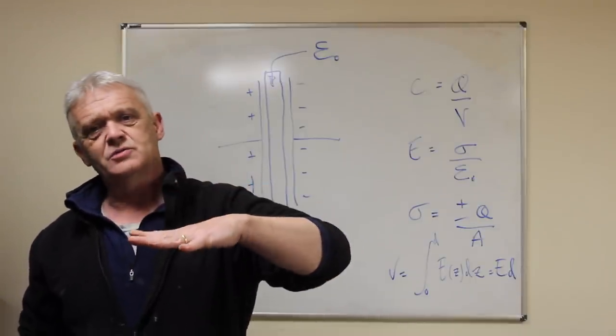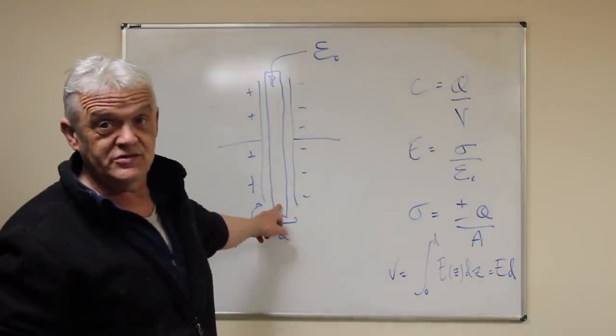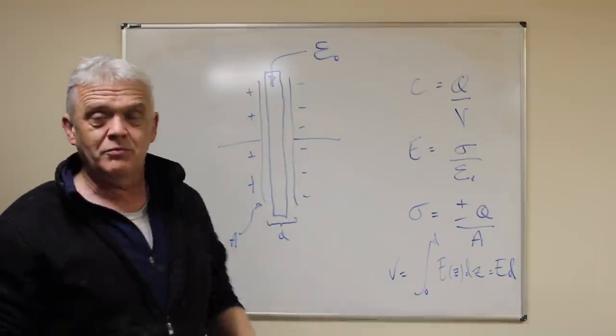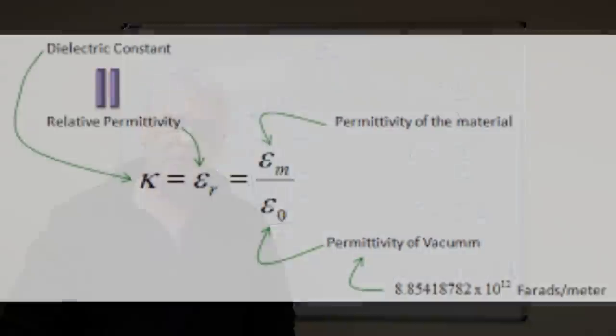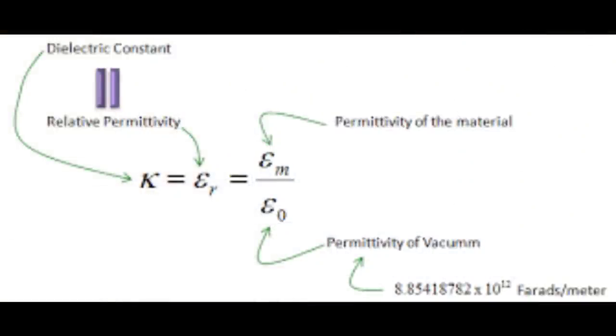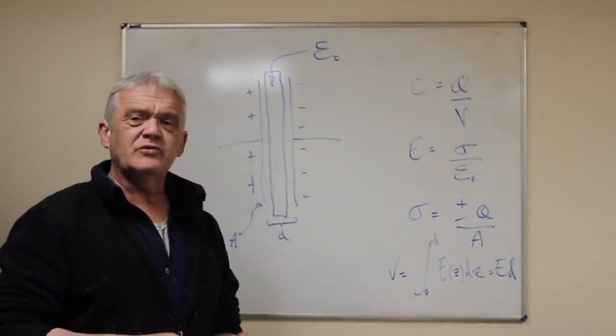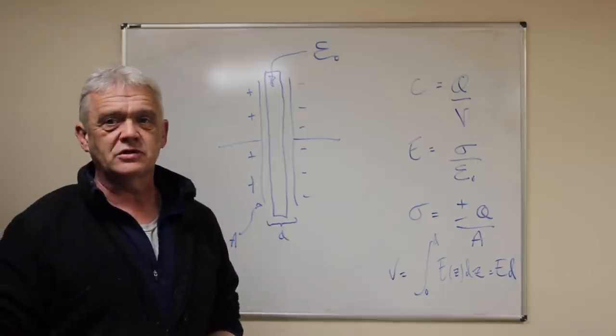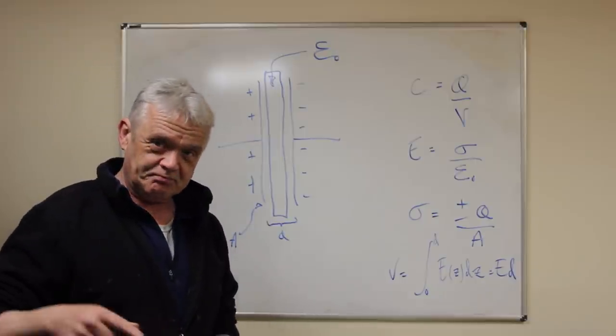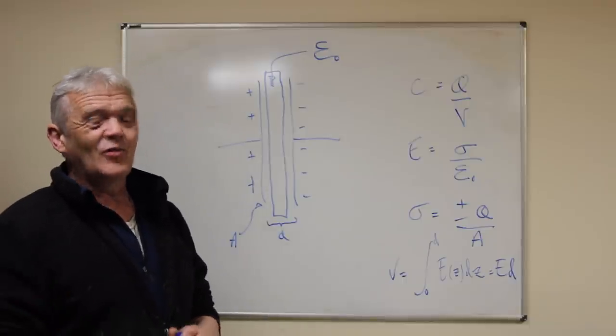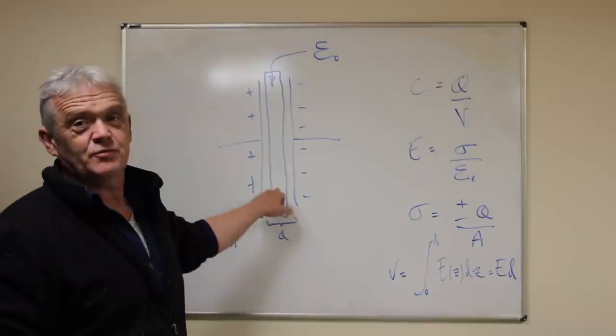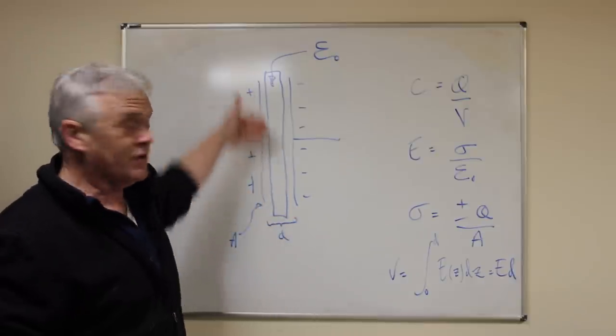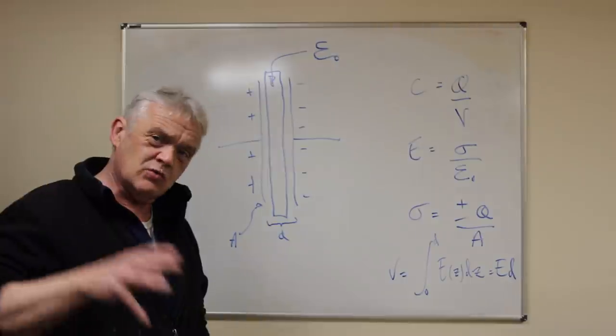That polarization affects the capacitance and the amount of energy that can be stored between those two plates. Those are the important elements of a capacitor. We're going to take this as free space to make our job easier, but different materials will have different results, producing relative permittivity.